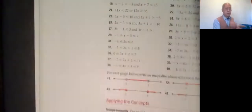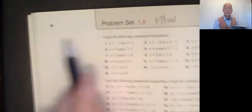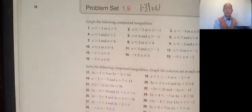These are notes from Elhom's Math 120 Online, Section 1.9. It's on page 78. The problems are 1 to 39 odd.